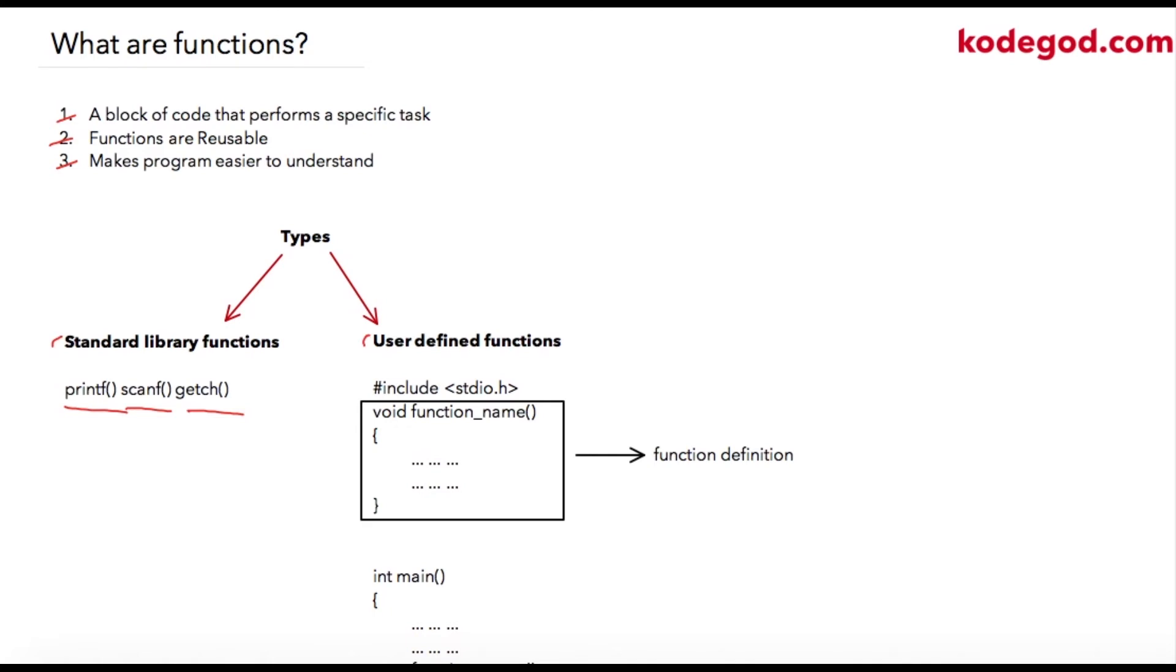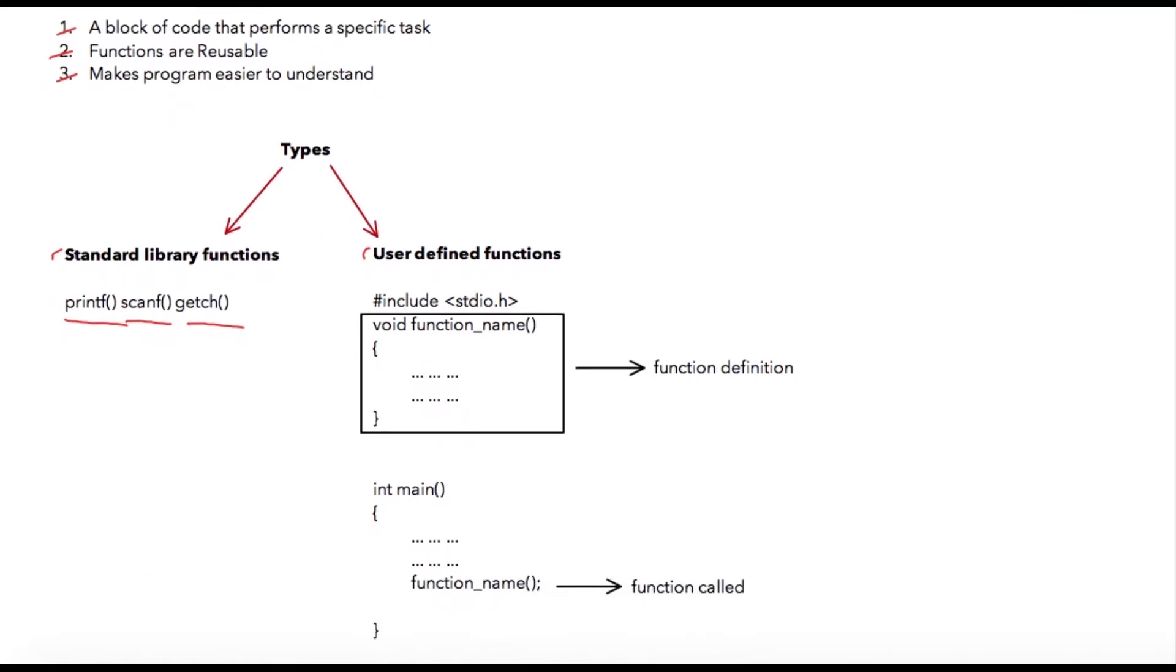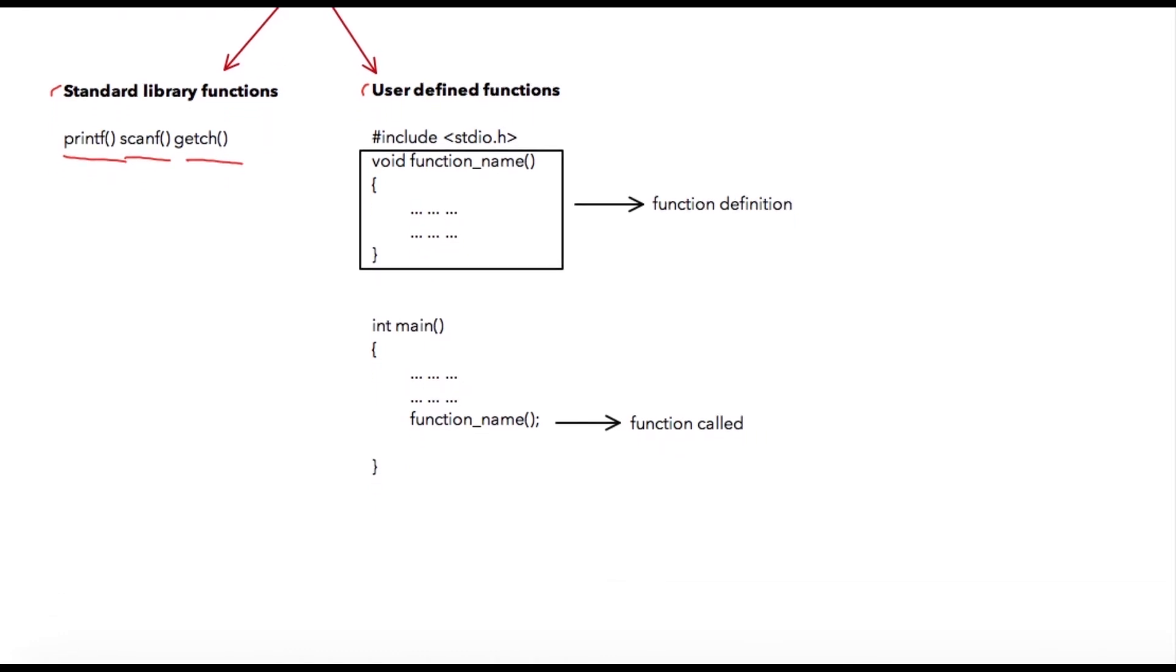User-defined functions are functions which user defines in their code. So let us check how user-defined functions can be used. Consider this block of code. This block is your function definition—that is where you define your function.